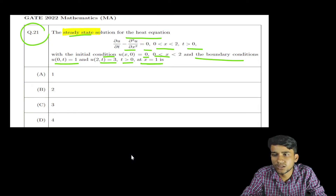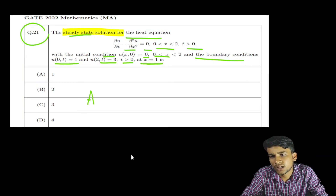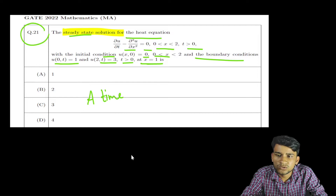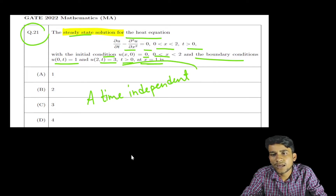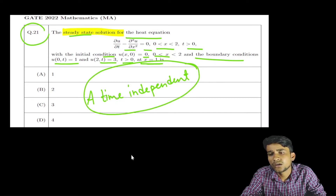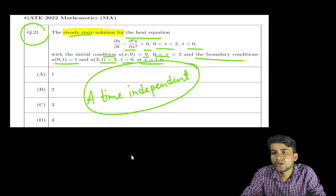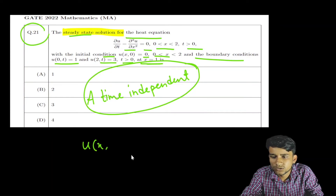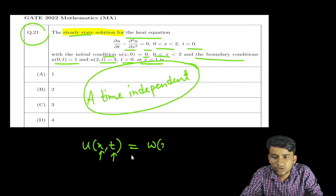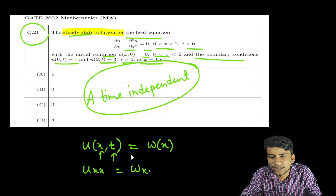First, we need to know what a steady state solution is. A steady state solution of a partial differential equation means a time-independent solution. So let us take u(x,t) = w(x). Since u depends only on x, we have u_xx = w_xx, and u_t = 0, since w is independent of t.